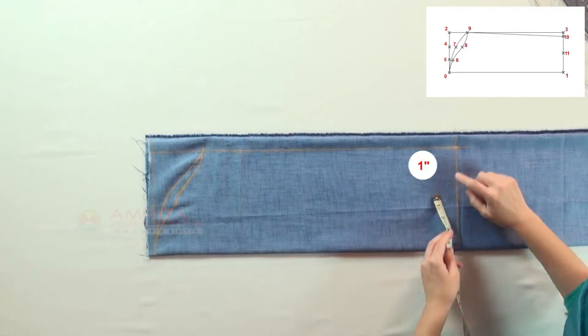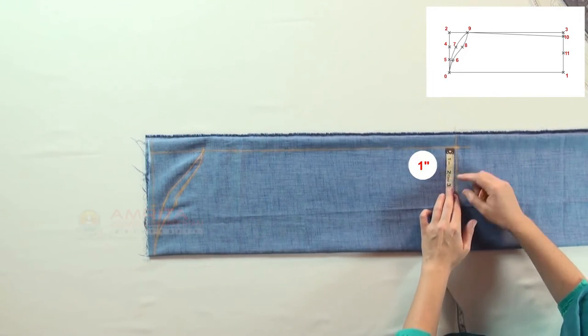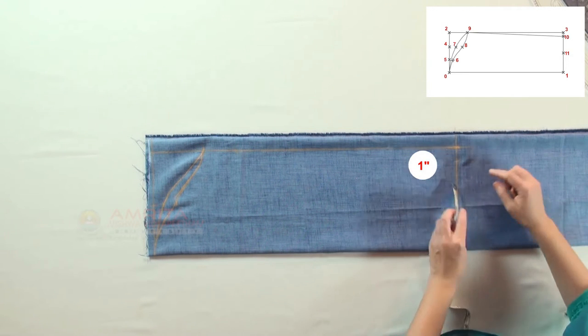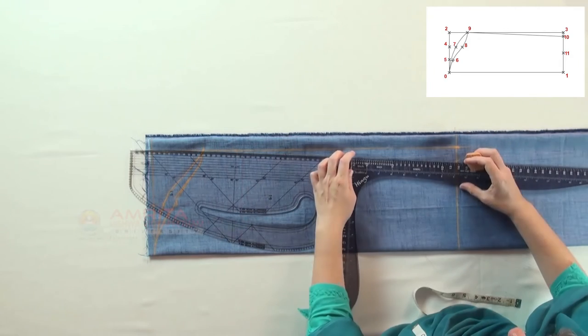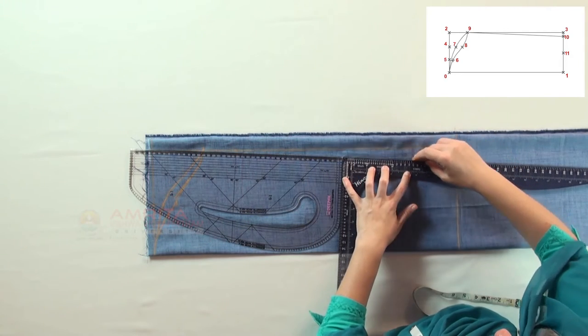From point three, measure one inch inwards and make a mark. This is point ten. Join points ten and nine in a straight line.